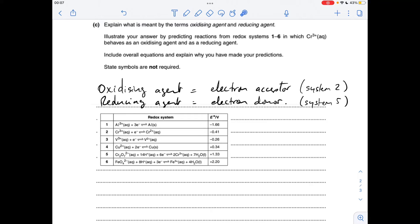We want the chromium 3+ system to move in the forward direction, so we need to pair this up with a system that's not as positive as this one. Remember, the positive one is the one that moves left to right, so we've got to pair it up with this one here - the aluminum 3+/aluminum one. It's the only one that's less positive than -0.41 volts.